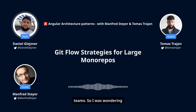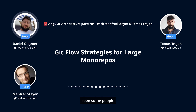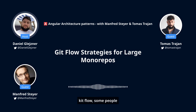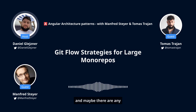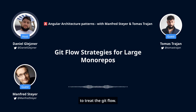I was wondering what kind of Git flow you think would be the best to handle this kind of cases? Because I have seen some people recommend the trunk-based Git flow, some people feature-based Git flow. Maybe there are some other approaches. I'm interested to hear your opinion on how to treat the Git flow.